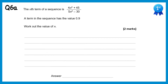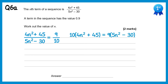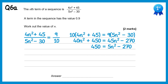In this question we're told one of the terms has the value 0.9, or 9 tenths, so we write the nth term equals 9 tenths. Cross multiplying gives 10 lots of 4n squared plus 45 equals 9 lots of 5n squared minus 30. Expanding gives 40n squared plus 450 equals 45n squared minus 270. Taking 40n squared from both sides gives 450 equals 5n squared minus 270. Adding 270 gives 720 equals 5n squared. Dividing by 5 gives 144 equals n squared, so n equals plus or minus 12. Since n can't be negative, the answer is n equals 12, the 12th term.